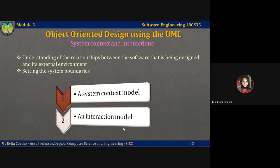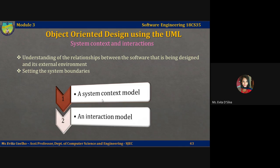Let's now take a look at system context and interactions. The first stage in any software design process is to develop an understanding of the relationships between the software that is being designed and its external environment. This becomes essential for deciding what functionality your system should provide and what functionality the system will obtain from other systems in its environment. This also lets you set boundaries for the system. System context models and interaction models present complementary views of the relationships between a system and its environment. A context system model is a structural model that demonstrates the other systems in the environment of the system being developed. An interaction model, on the other hand, is a dynamic model that shows how the system interacts with its environment as it is used.